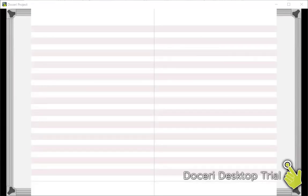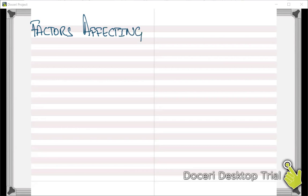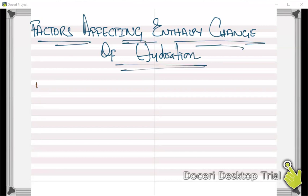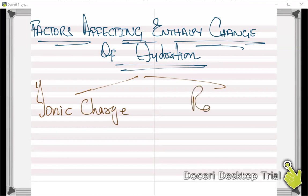The next topic is the factors that are affecting the enthalpy change of hydration. There are two factors: the first factor is ionic charge, and the other factor is the ionic radius.